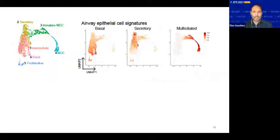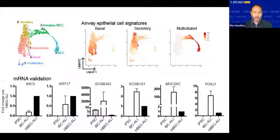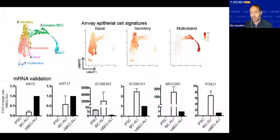We applied our primary cell signatures to these iPSC-derived cells, and they nicely identified the basal, secretory, and multi-ciliated populations. In a simpler comparison, we compared the mRNA of iPSC-derived cells to primary HBECs in similar conditions for standard airway genes and saw broadly similar gene expression. One exception is secretoglobin 3A2, which is much higher in our cells than in primary airway cells, possibly indicating a more immature or more distal secretory phenotype.